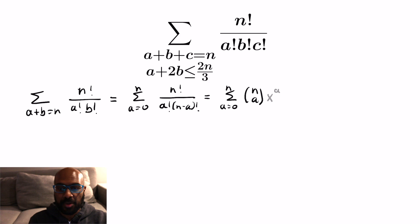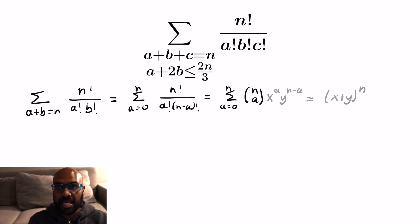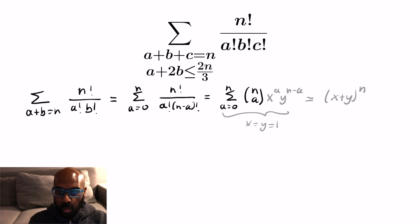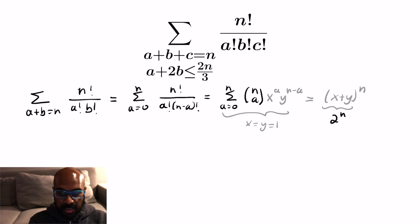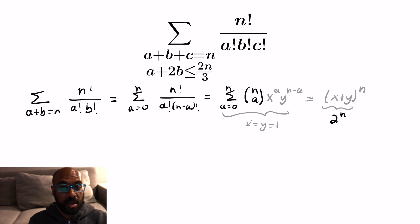The binomial theorem says if we attach a variable x to the a and y to the n minus a in this expression, it's actually the expansion of x plus y to the n as a binomial. If you want to compute the actual sum on the left side, we'd set x and y equal to 1, and doing that on the right-hand side gives us 2 to the n. So this entire sum is exponential with n in the exponent and a base of 2, which gives us a sense of how big the original sum is going to be.